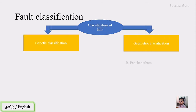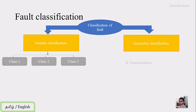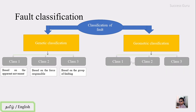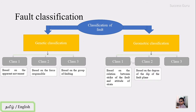Now let's get into the classification of faults. Faults are grouped into two: genetic classification and geometric classification. In genetic classification there are three classes: based on apparent movement of fault blocks, based on forces responsible for fault formation, and based on groups of faults together. In geometric classification there are also three classes: based on relation between fault strike and strata attitude, based on degree of dip of the fault plane, and based on relation between slip direction and fault plane attitude.